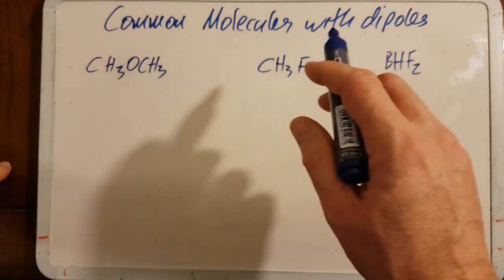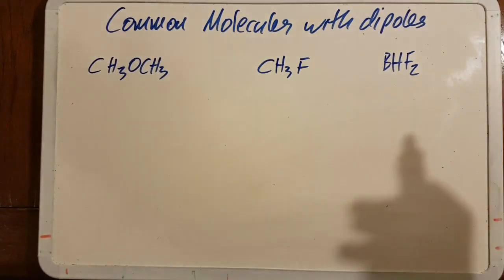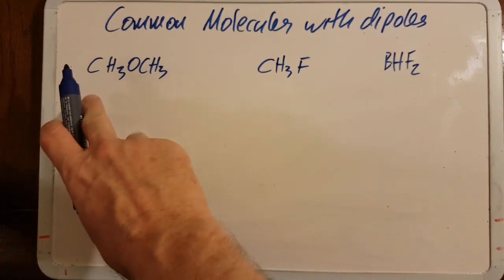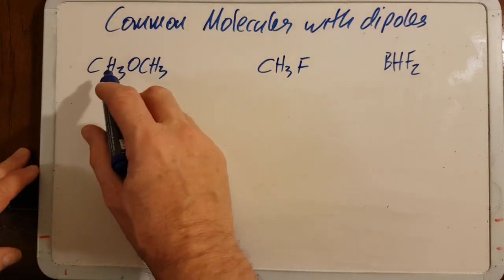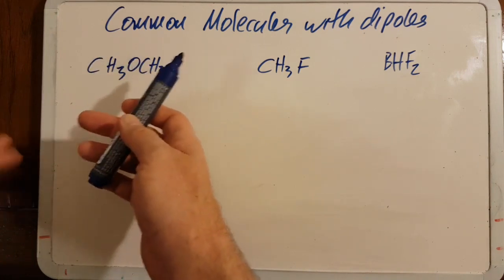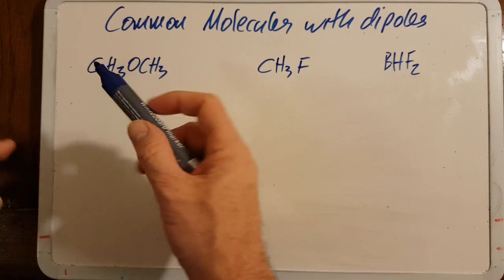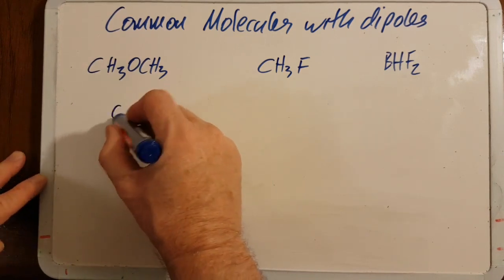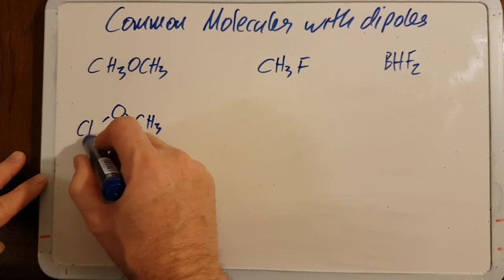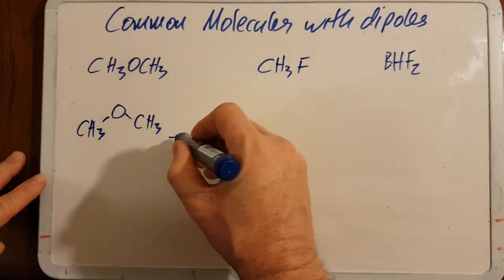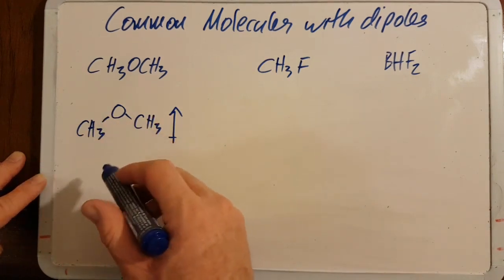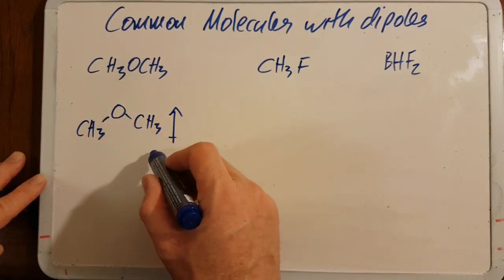All right, these are common molecules with dipoles—not common that you'll bump into them in everyday life, but common for the IB. This is methoxymethane (CH3OCH3). It looks like it has no dipole, for example this end of the molecule and that end are symmetrical. So where's the dipole? Well, you have to know that it's actually a bent molecule. Oxygen has the higher electronegativity than the carbon, and so they'll tend to stack up a little bit like this.